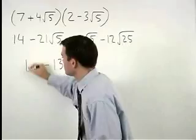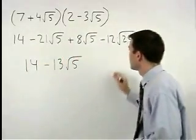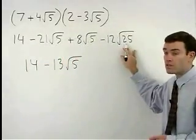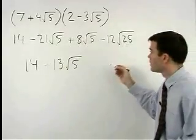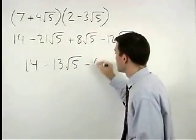Bring down the 14, and the square root of 25 is 5, so we have negative 12 times 5, which is negative 60.